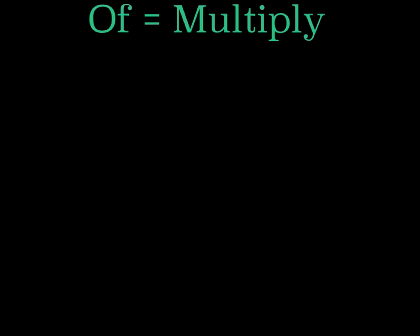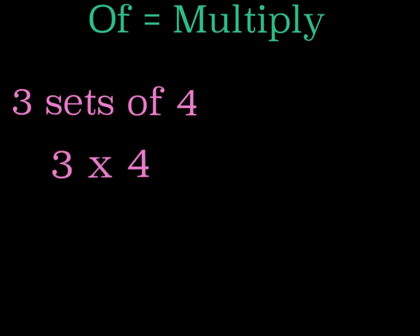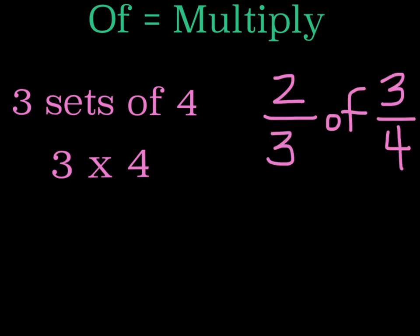First, let's explore the concept of using the word of to mean the same thing as multiply. Here's what I mean. What do you think of when I ask you to figure out what three sets of four is equal to? If your mind went directly to the multiplication problem three times four, you are correct. Using the word of in mathematics will typically indicate that you are supposed to multiply some numbers together. This is the same idea when using fractions.